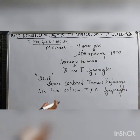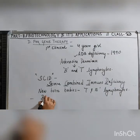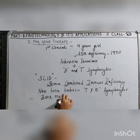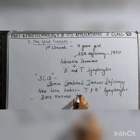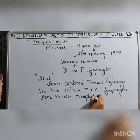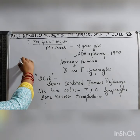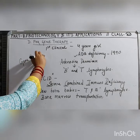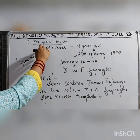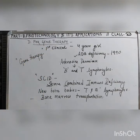In some cases, the patient can be treated by bone marrow transplantation. When bone marrow transplantation cannot be done, gene therapy replacement technique is used.